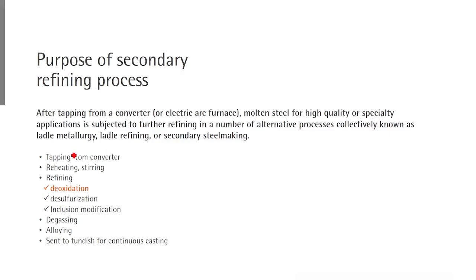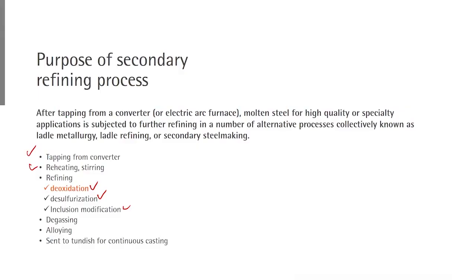Liquid steel is tapped from the converter, and may be reheated to a temperature suitable for casting. Agitation inside liquid steel is carried out, and the steel is refined chemically — we need to deoxidize and desulfurize it. As a result of the deoxidation process, non-metallic inclusions are formed and must be removed or modified. Gaseous impurities like nitrogen or hydrogen may also enter liquid steel during tapping and must be removed through degassing.